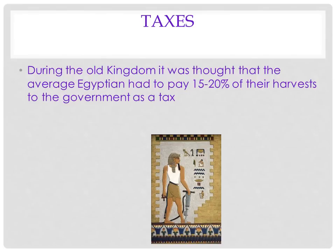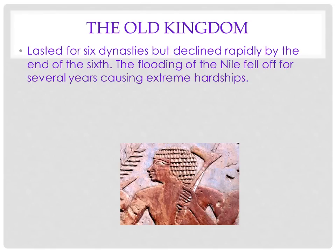Believe it or not, Egyptians had to pay 15 to 20% of their harvest to the government as a tax. The Old Kingdom lasted for six dynasties, but then the Nile stopped flooding, which created all kinds of hardships and problems for the pharaoh because everybody blamed him.